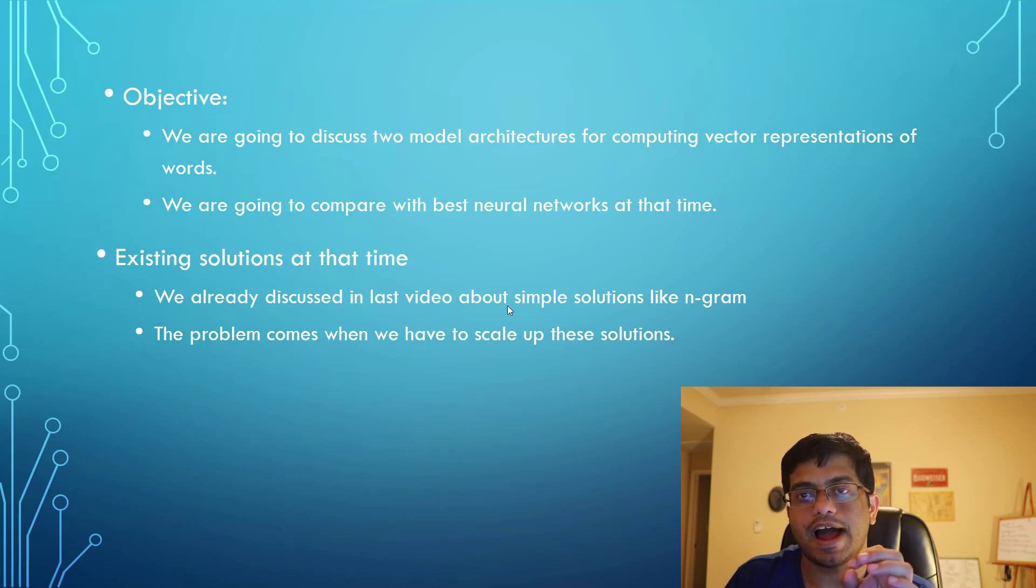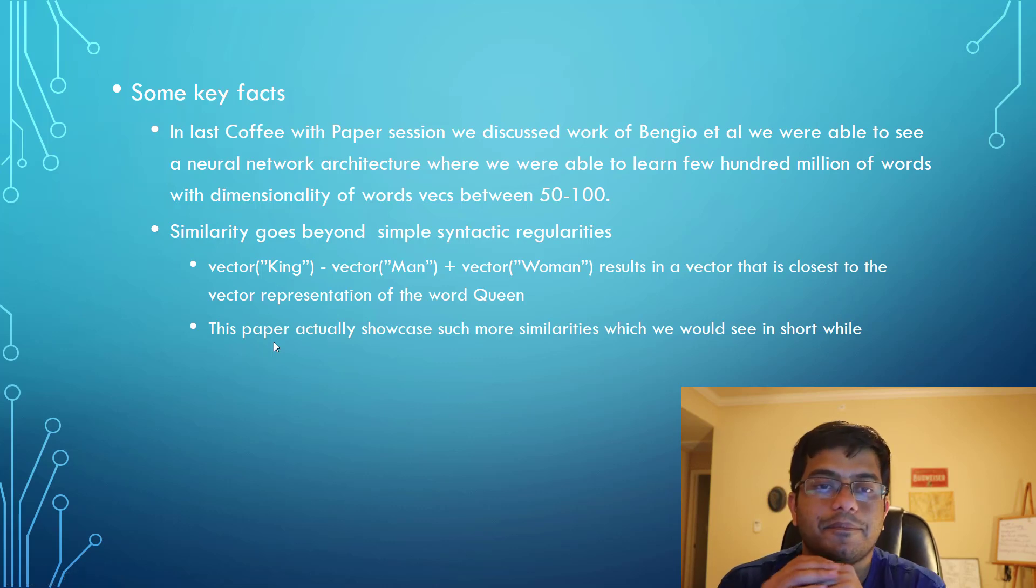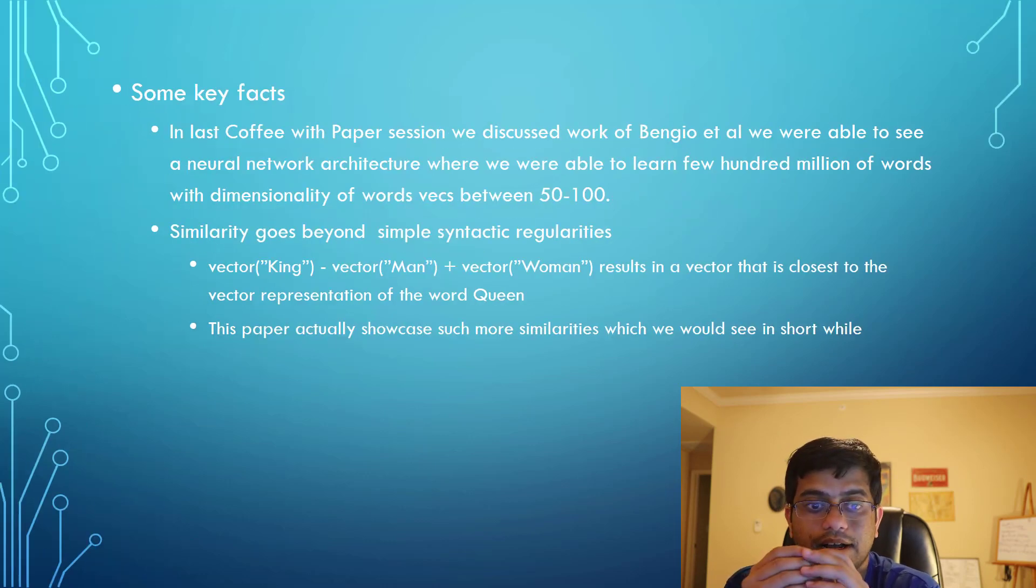I'm going to lay down some key facts that might be interesting. First, in our last video we learned word vectors with dimensionality between 50 to 100 over a few million words. Second, the similarities are actually beyond syntactic regularities. If we have a vector for king, subtract man, and add woman, we find this vector is closest to queen. That's pretty awesome because we're able to go beyond normal syntactic stuff. This paper shows more of these syntactic and semantic similarities which we'll see shortly.